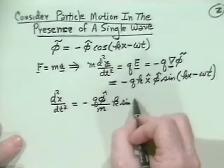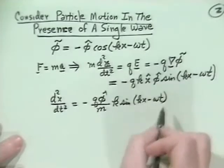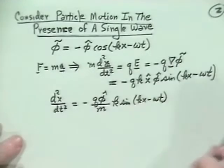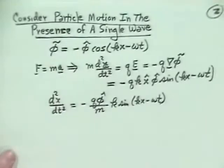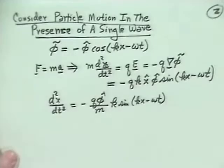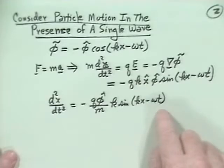That's the equation we're interested in solving. Before we solve it, let's use an energy argument. By multiplying the equation of motion by the velocity x̂-dot, the left side becomes the time derivative of the kinetic energy, and the right side becomes the time derivative of a potential energy. So we get a conservation of energy statement.